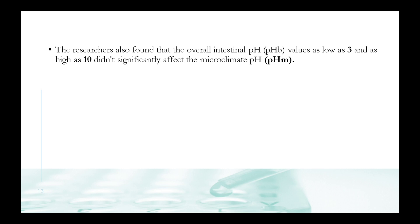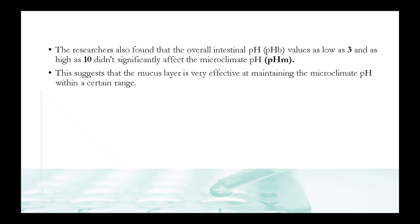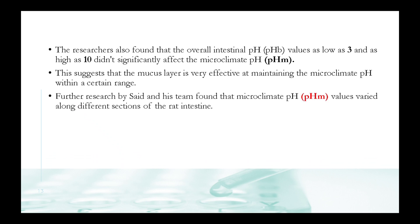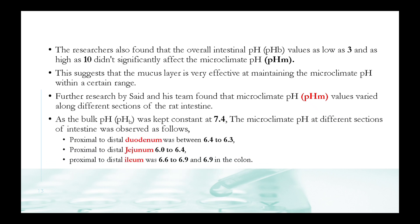The researchers also found that overall intestinal pH (pH-b) values as low as 3 and as high as 10 didn't significantly affect the microclimate pH (pH-m), suggesting the mucous layer is very effective at maintaining the microclimate pH within a certain range. Further research by Sedd and his team found that microclimate pH (pH-m) values varied along different sections of the rat intestine. With bulk pH (pH-b) kept constant at 7.4, the microclimate pH was: proximal to distal duodenum 6.4–6.3, proximal to distal jejunum 6.0–6.4, proximal to distal ileum 6.6–6.9, and 6.9 in the colon.